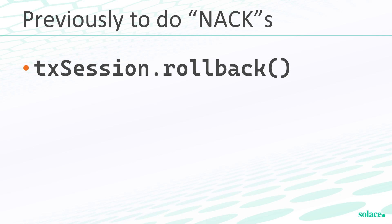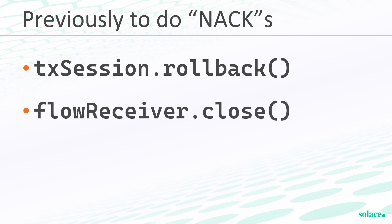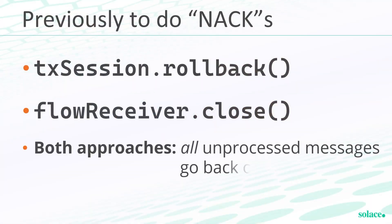Up until recently, the only way to NACK a received message in Solace was either to use session transactions and do a rollback, or to close the flow to unbind from the queue to force the redelivery of a particular message. The only problem with that is if you have a large AD window or you've prefetched a bunch of messages off your queue, it's going to cause all unacknowledged messages on that flow to be made available for redelivery. There is no way to do it for exactly just one message.